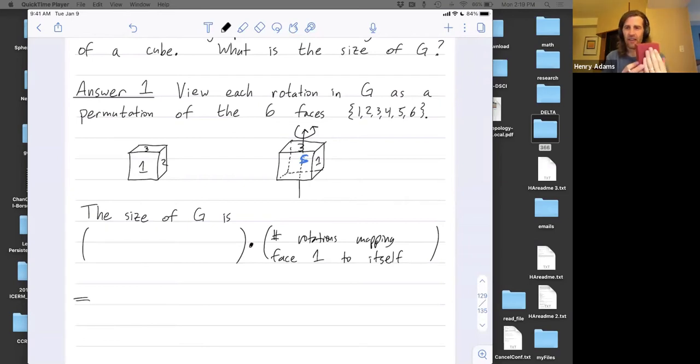So here's face 1. If I fix face 1, I could either do nothing, or I could rotate by 90 degrees fixing face 1, or 180 degrees, or 270 degrees. So there's four rotations that fix face 1.